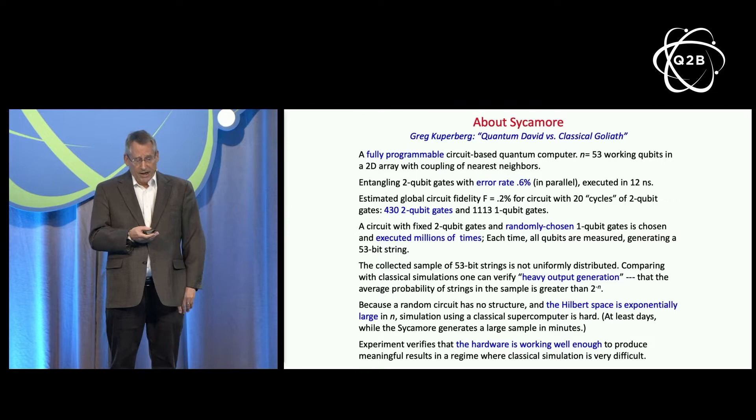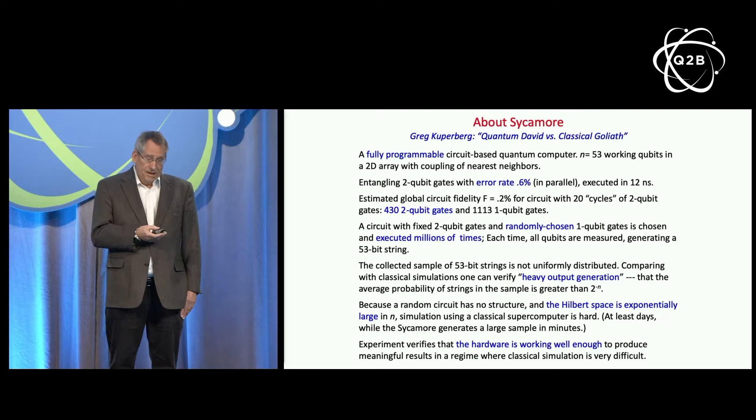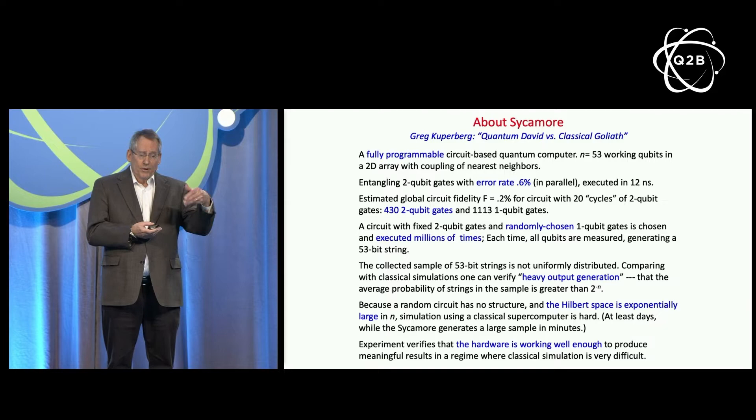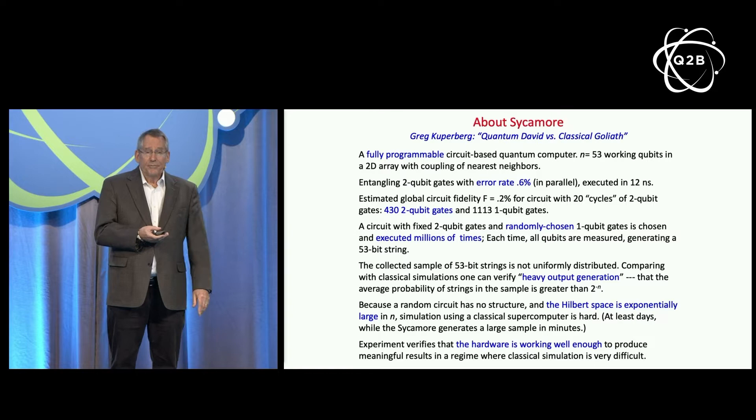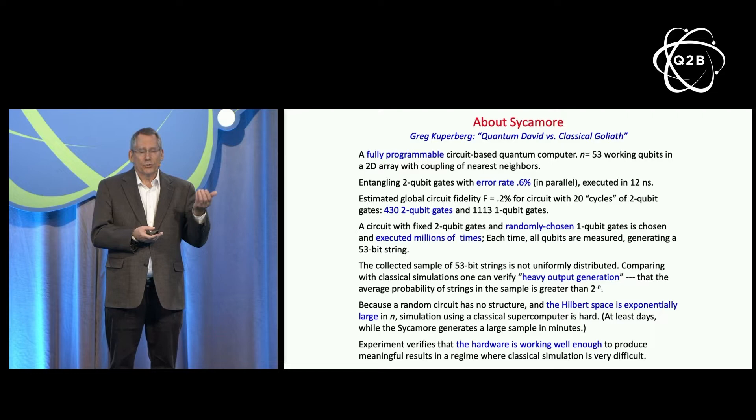The Sycamore device had 53 working qubits in that two-dimensional array. They demonstrated two-qubit entangling gates with an error rate per gate of 0.6%, even when all qubits were operating in parallel, performed in 12 nanoseconds. For the largest circuit they executed, which had 432 two-qubit gates, they achieved a circuit fidelity of about 0.2%. With fixed two-qubit gates in a circuit, they randomized the single-qubit gates and executed the circuit millions of times, each time measuring all qubits to generate a 53-bit string.